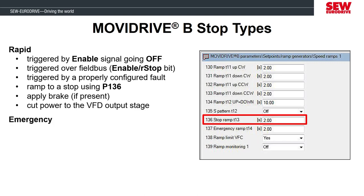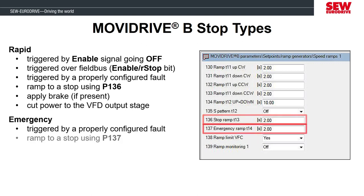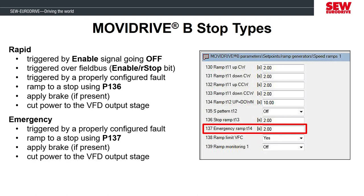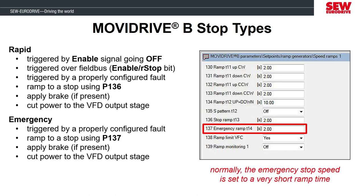The other stop type the MobiDrive can have is an emergency stop. This is reserved for fault conditions that have the response parameter set to be an emergency stop, which has a specific parameter for the emergency ramp. Once the motor has come to a stop, the brake will apply and then the output of the VFD will shut off. Generally the emergency ramp is used for specific fault scenarios where you want the deceleration ramp to be very short when the MobiDrive issues a fault.